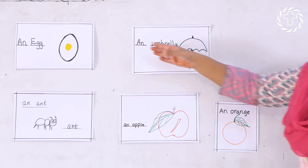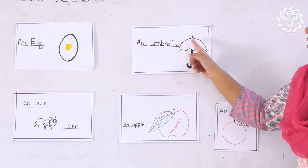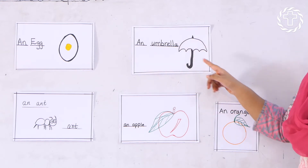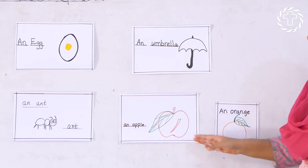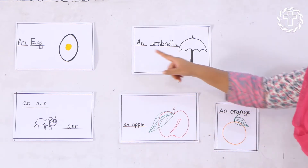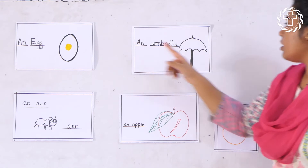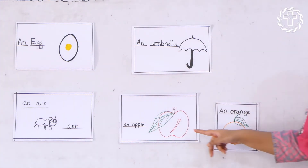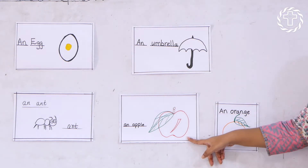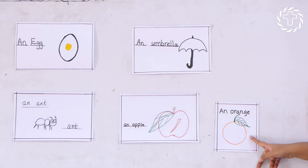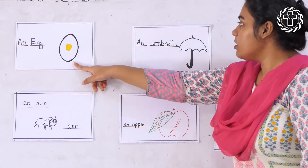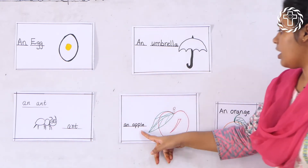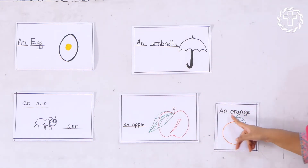So these words are used with 'an'. The first picture is egg, second one is umbrella, third one is 'and', fourth one is apple, and the fifth one is orange: an egg, an umbrella, an and, an apple, and an orange.